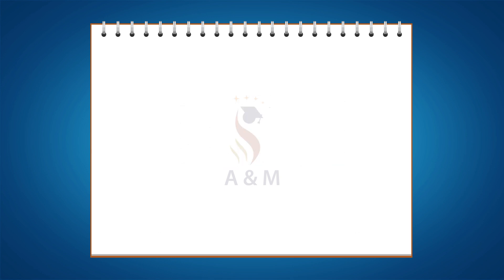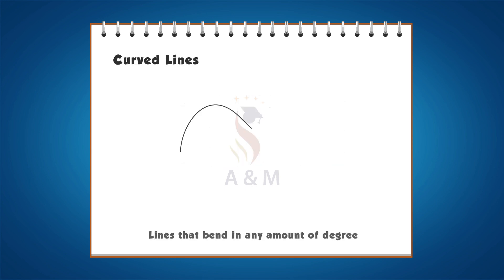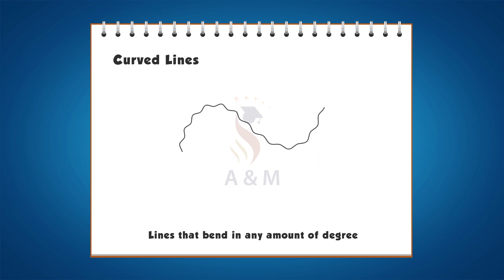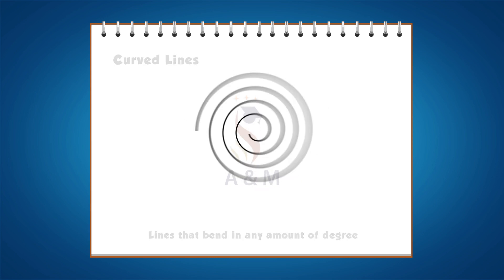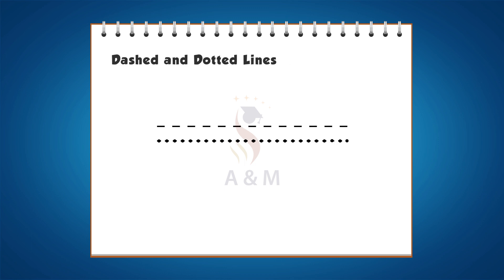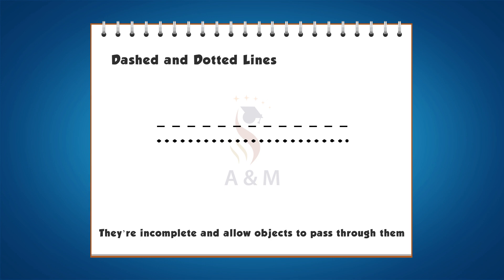Fifth, curved lines. Curved lines are lines that bend in any amount of degree. They may be gently wavy to tightly wound spirals. Sixth, dashed and dotted lines. Dashed and dotted lines are implied lines.